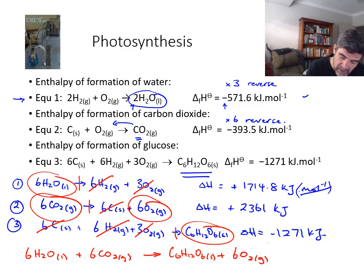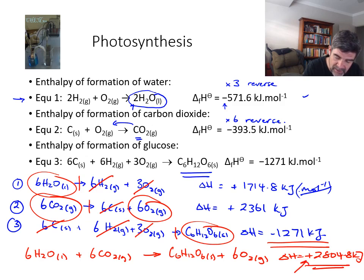I've now reformed it. And of course, in order to work out the delta H value, I need to add each of these together. When I add each of these values together, I find I end up with a delta H value of plus 2804, give or take 4.8 kilojoules. This is a positive value, which means it's an endothermic reaction. We have to put energy in for this process to occur. And that makes sense because sunlight is a very important component of the photosynthesis reaction.